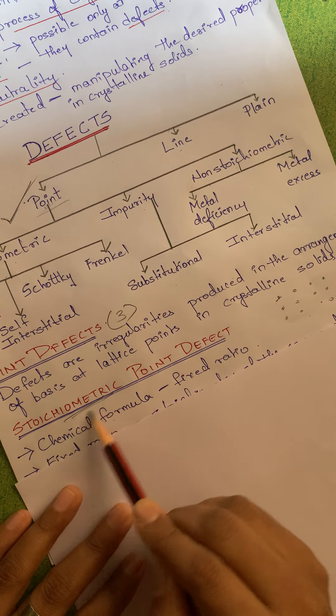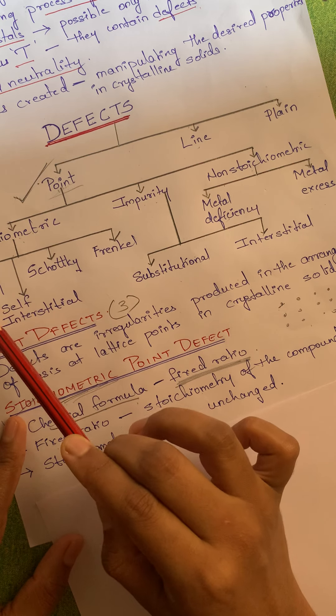Recall that lattice plus basis forms a crystal structure. At a particular lattice point, the constituent particle is our basis. If that particle is missing or has changed its position, we call it a point defect. Point defects are classified into three types, and we'll start with the first: stoichiometric point defect.